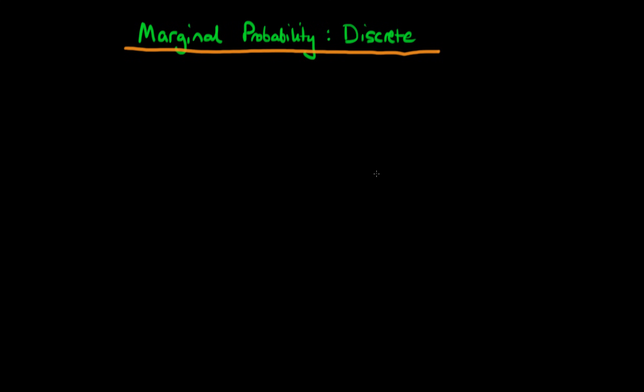In this video I want to introduce the concept of marginal probabilities, and I'm going to do so via the use of a couple of discrete random variables. I want to start off by talking about an example.